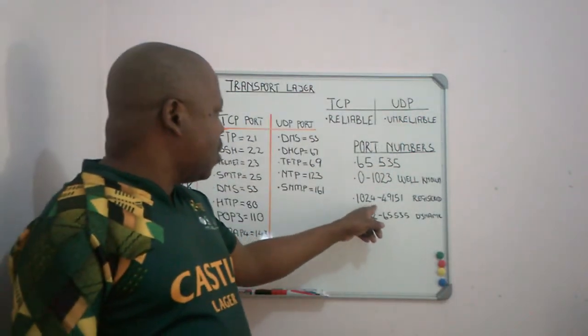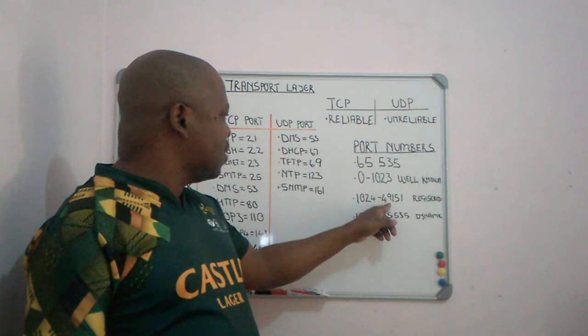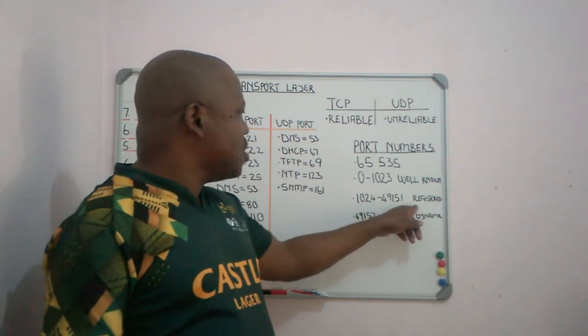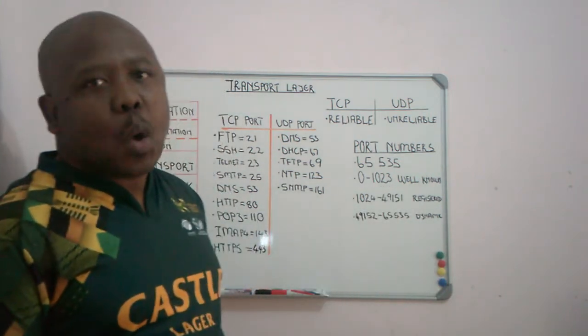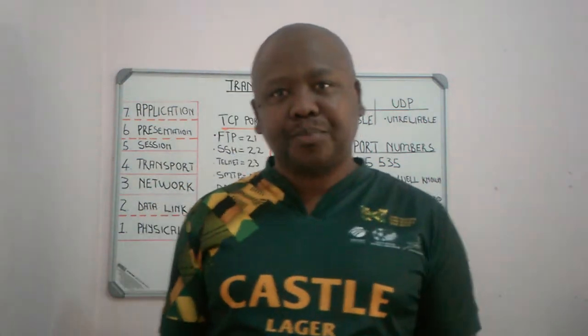From 1024 to 49,151, we have registered ports, or user ports. They are used for proprietary applications and can be assigned to hosts or clients if not in use by proprietary applications. Examples of proprietary applications include Lotus Notes, remote desktop, and many more.